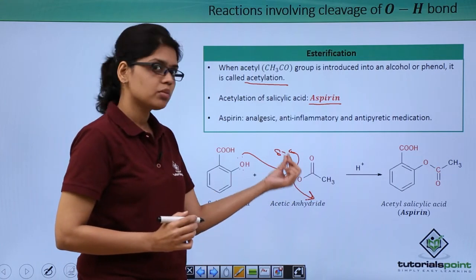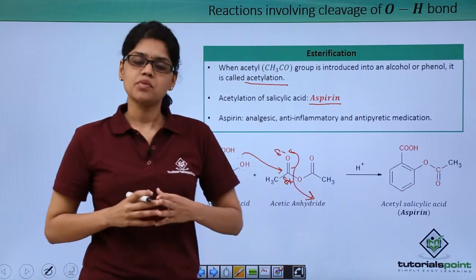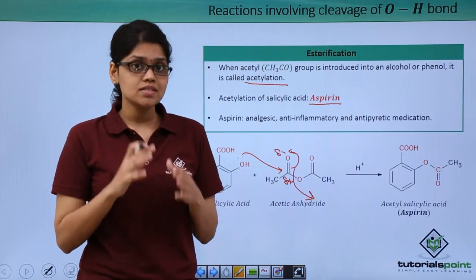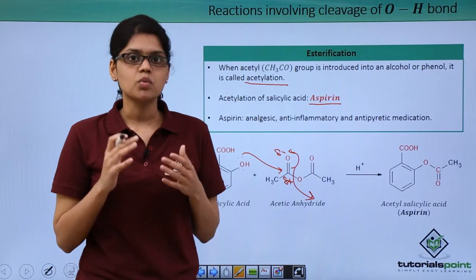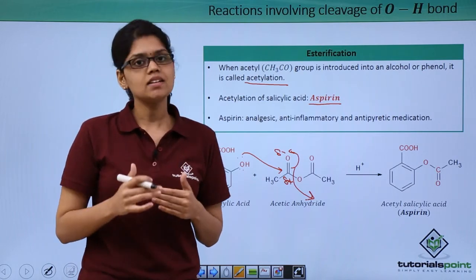So here we can see CH3C double bond O, and this oxygen group gets added resulting in the formation of an ester. This is essentially an overview of what essentially happens in the mechanism of esterification, details about which will be dealt in your next chapter.